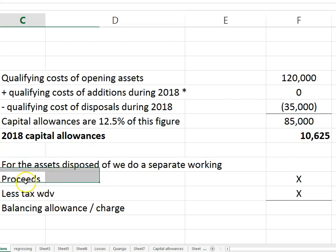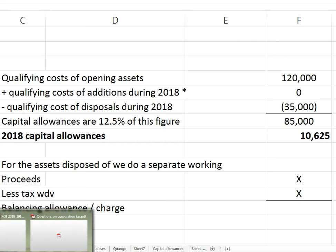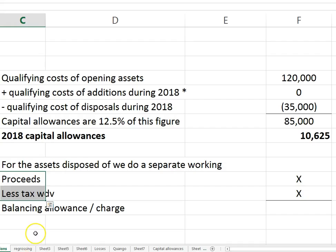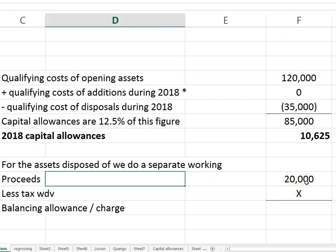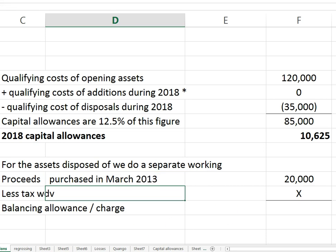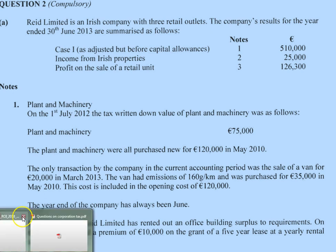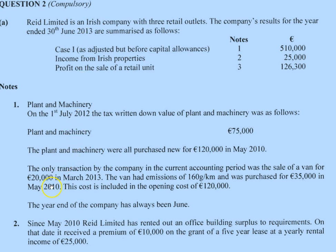If you dispose of an asset, you always have a separate working to do, and it's fairly straightforward: proceeds less the tax-written-down value. The van was sold for $20,000. We have to work out the tax-written-down value. Capital allowances were claimed in year-end June 2010, 2011, and 2012, and you get none in the year of sale — so three years of capital allowances claimed, meaning three-eighths gone and five-eighths left.